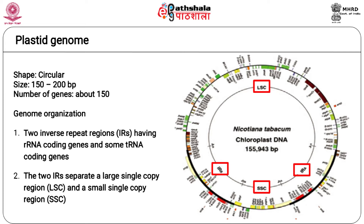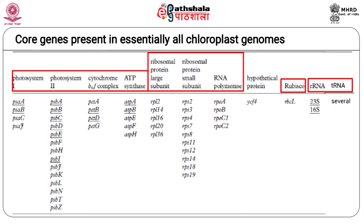A typical chloroplast genome consists of two large inverted repeat regions of about 22 kilobase pairs each, which are separated from one another by a large single copy region and a small single copy region. The chloroplast genomes code for about 150 genes, which include genes coding for proteins that form part of the photosynthetic light reaction complexes, proteins forming the large subunit of ribulose bisphosphate carboxylase (RuBisCO), and RNA and proteins involved in transcription and translation — namely RNA polymerase, tRNAs, and ribosomes.